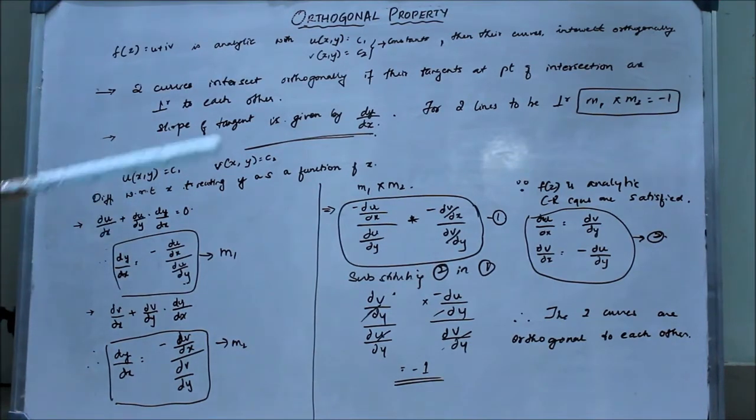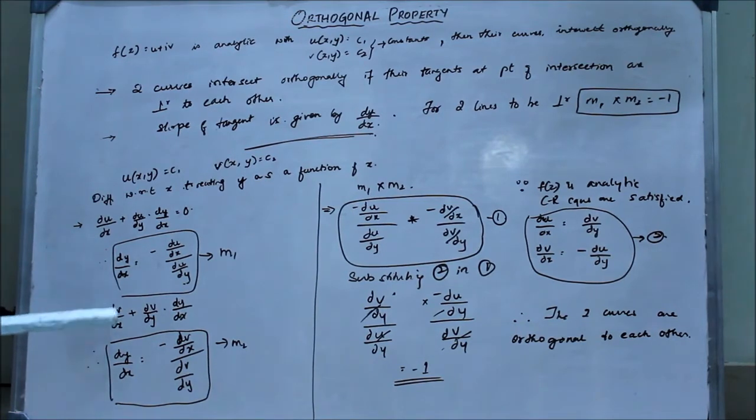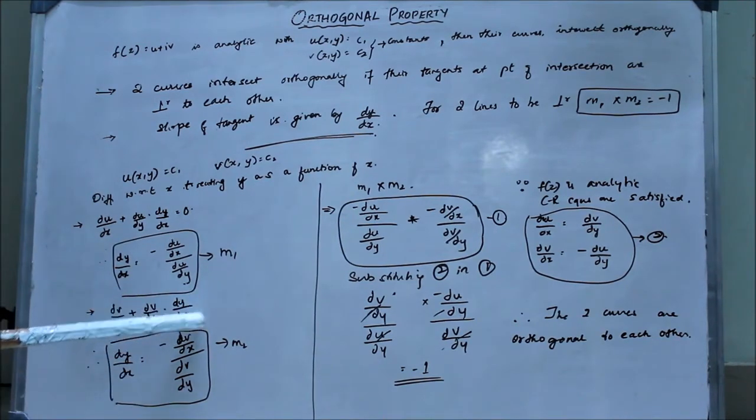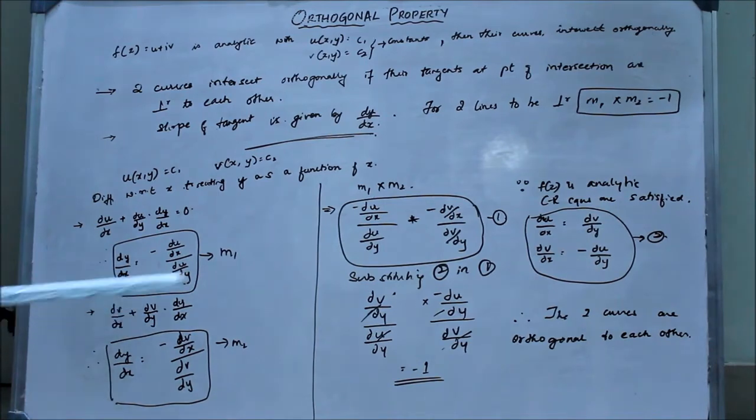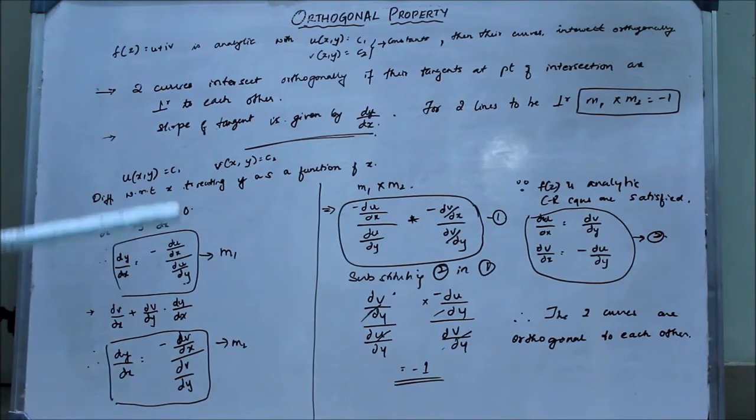Now we differentiate the second equation with respect to x. We get dv/dx plus dv/dy into dy/dx equal to 0. Bringing this to the other side, dy/dx equals negative of dv/dx divided by dv/dy. This is the second slope, m2.